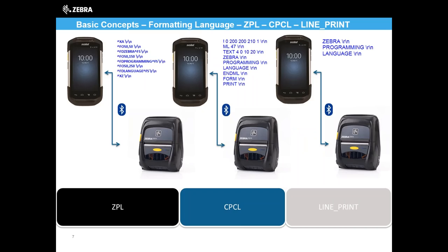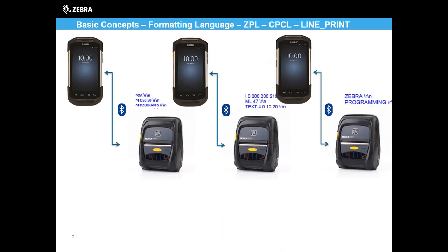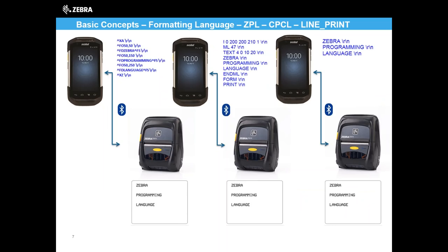Talking about formatting languages: BPL, CPCL, and LinePrint are the three more common ones, all available on most of our mobile printers. They differ in commands and structure, but most of the time you can get a fairly similar label from each. The differences come when printing graphics, getting printer status, or doing internationalization — for example, printing Chinese or Arabic characters. Generally you'll want to use ZPL for those cases, as it handles them much better than the other languages.